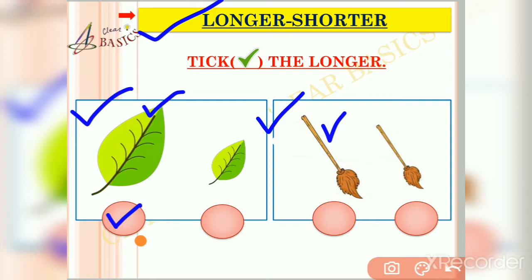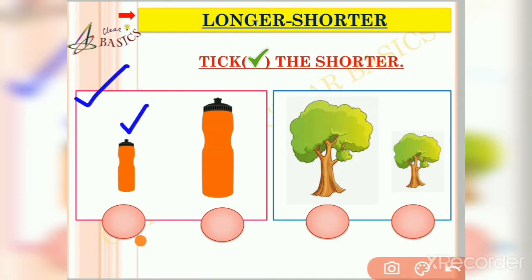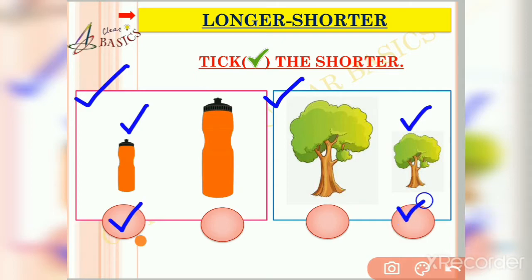Now friends let us do some fun again. Here you can identify on your own and tick the shorter one between these two pictures. In the first picture, the left one is shorter than the right one, so we tick the shorter one. In the second picture, the left is shorter than the other one, so let us tick the shorter one. I hope you all have enjoyed it very much.